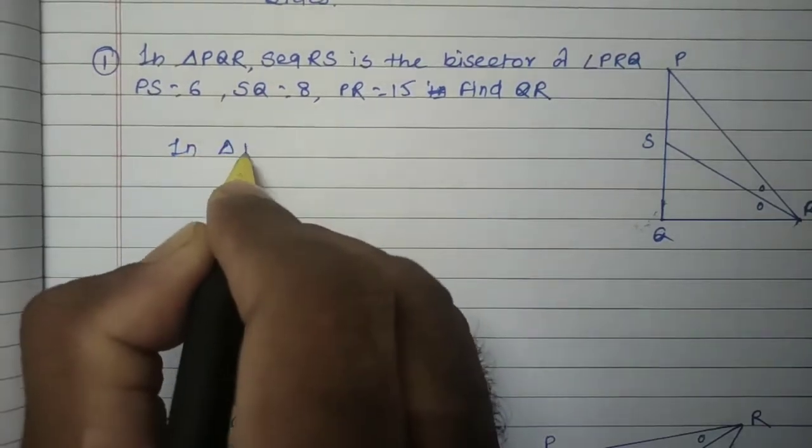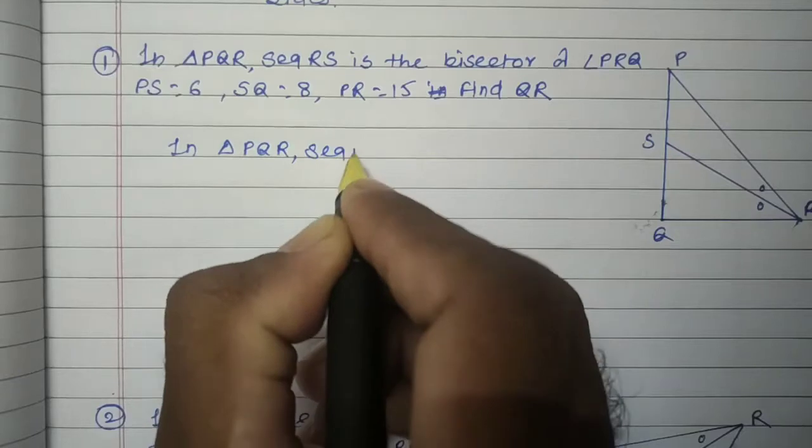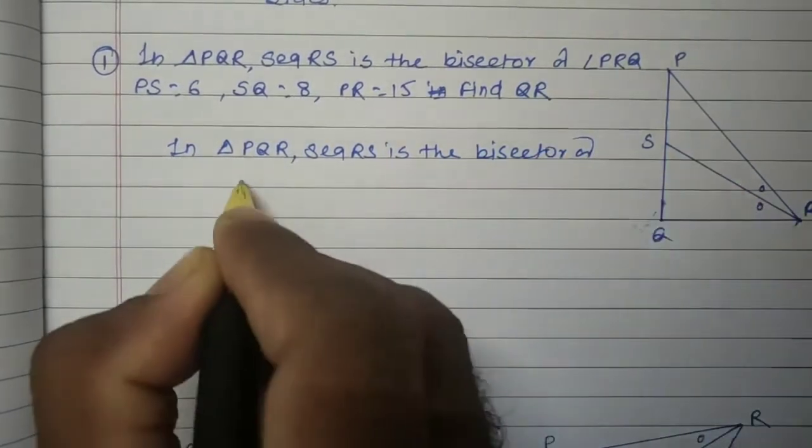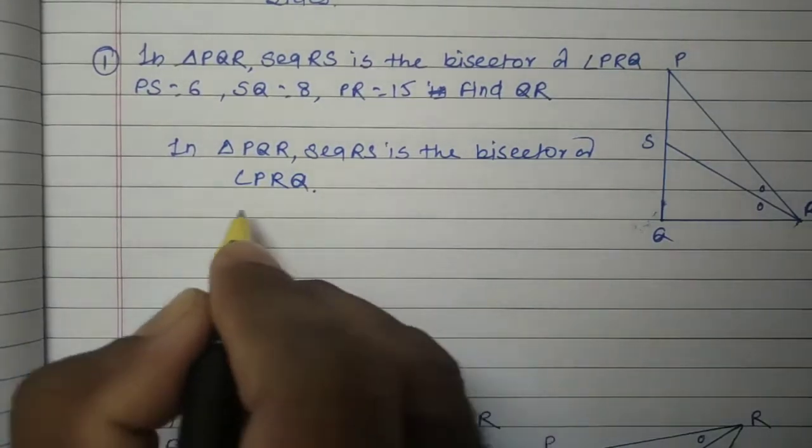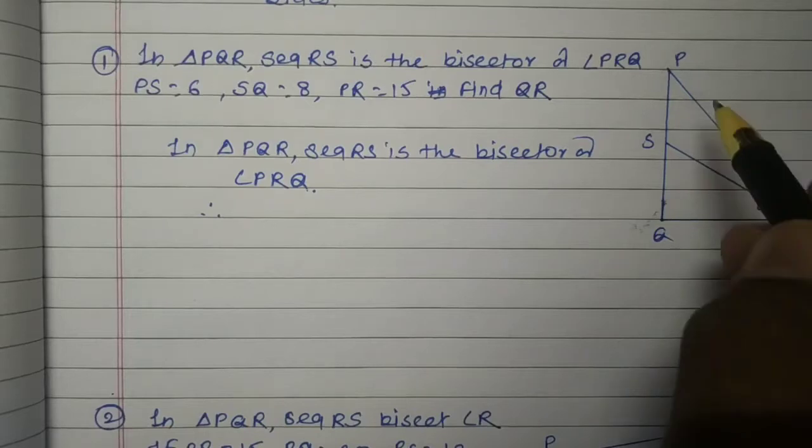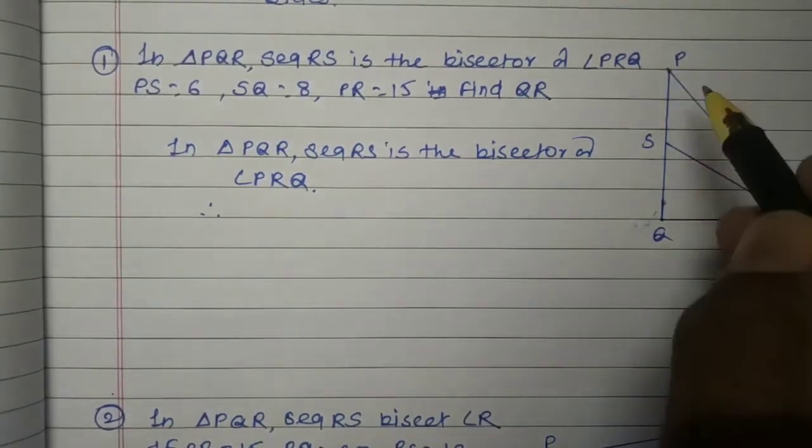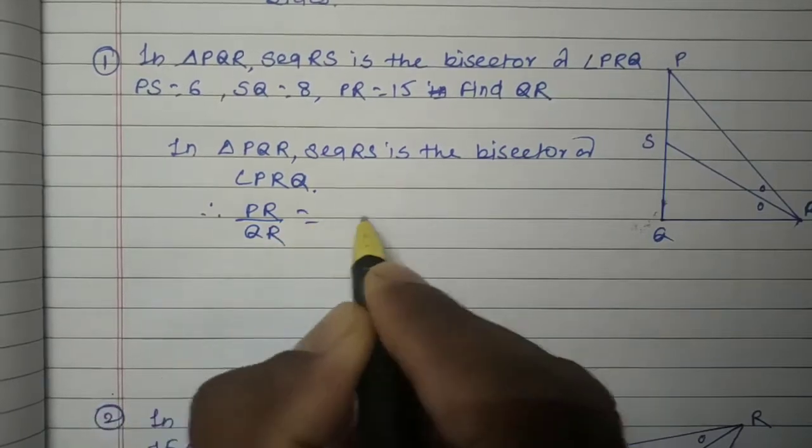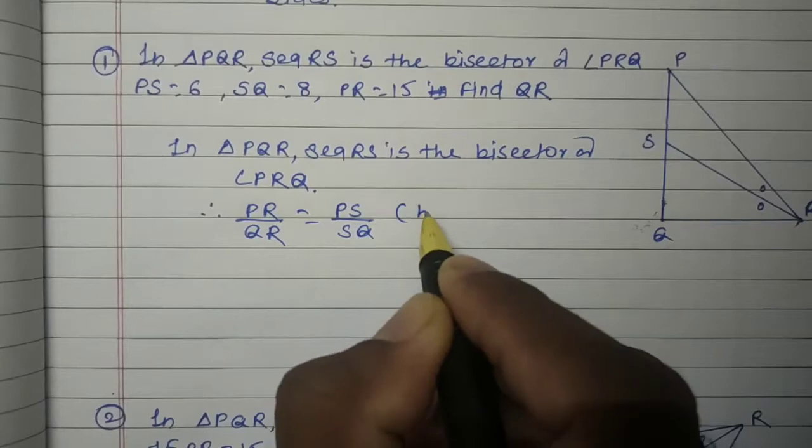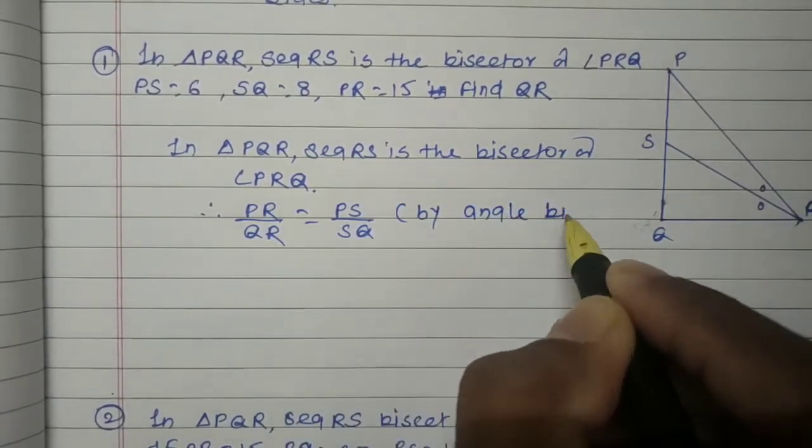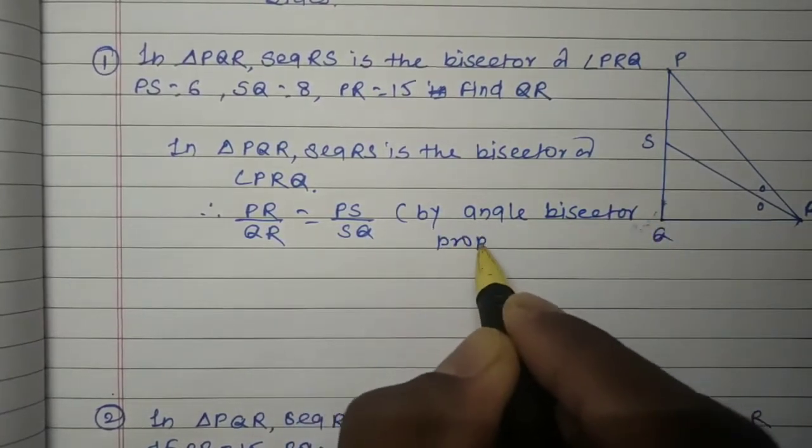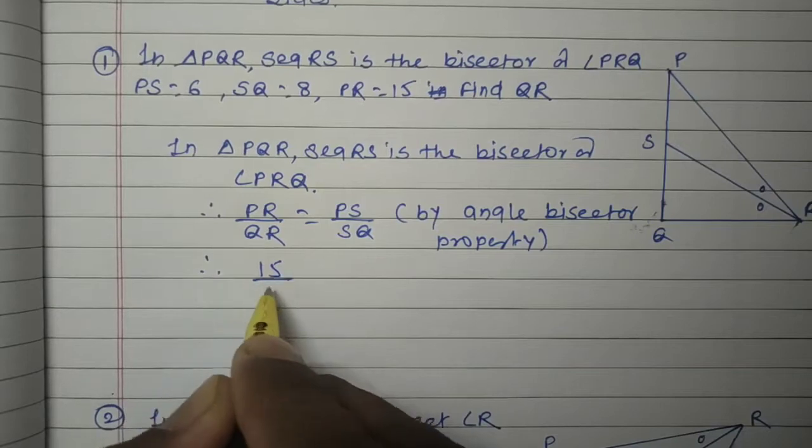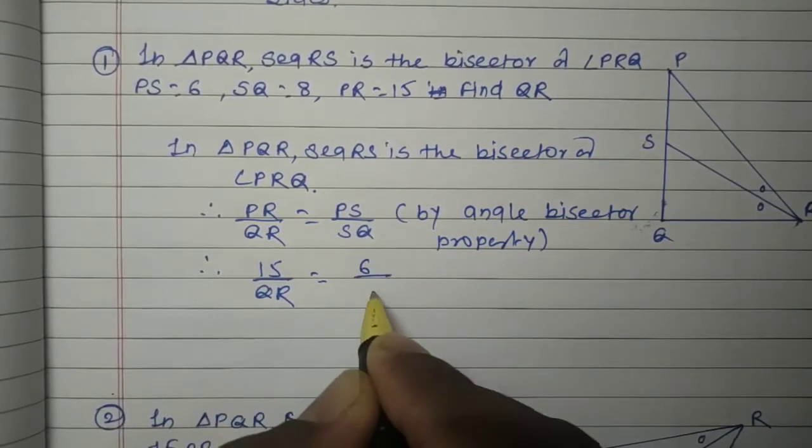In triangle PQR, segment RS is the bisector of angle PRQ. Then by angle bisector property, PR upon RQ equals PS upon SQ. Put the values: PR equals 15, QR is not given, PS equals 6, SQ equals 8.